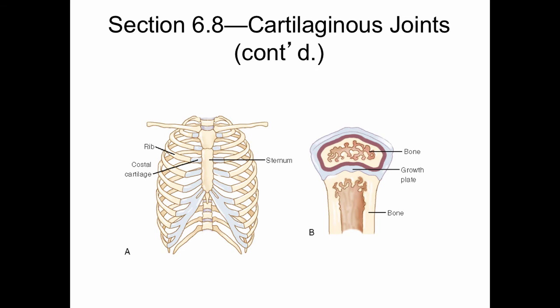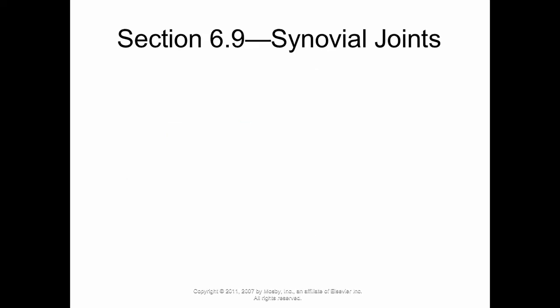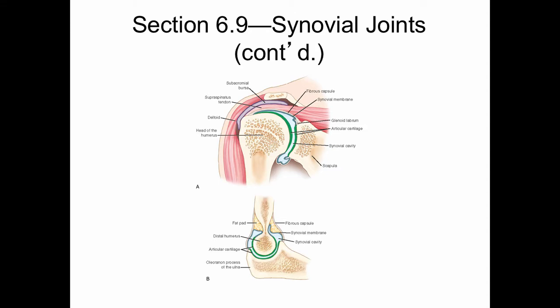Here are some examples of synchondrosis joints, including the hyaline cartilage connecting the ribs to the sternum and the growth plates that occur next to developing long bones. Now let's take a look at synovial joints — these are the joints that most people think of when they think of joints. The synovial cavity and the joint cavity refer to the same structure. The shoulder joint and elbow joint are both synovial joints, and you can see the synovial cavity in cross-section.